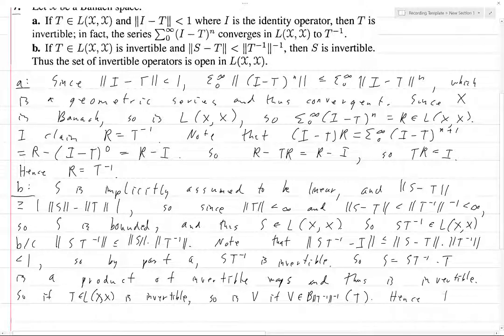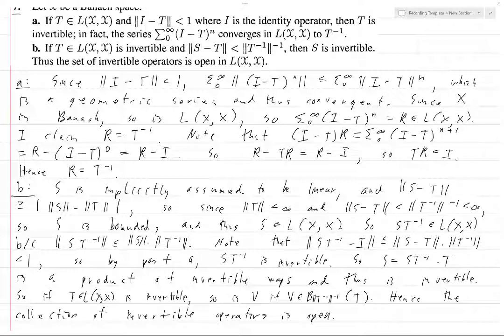Hence the collection of invertible operators is open. Because every point contains an open neighborhood that's contained in the set. That's what it means to be open. And there we go, we finished the proof.